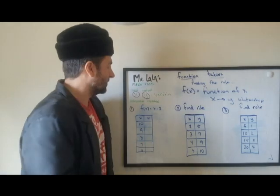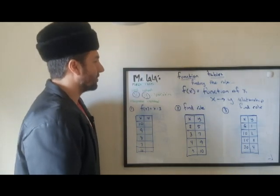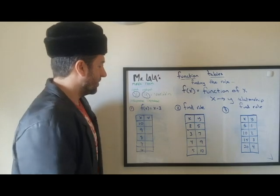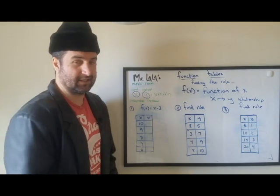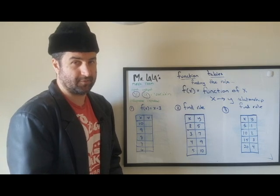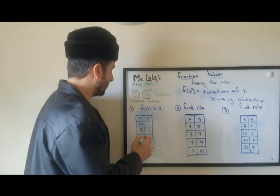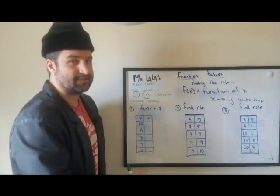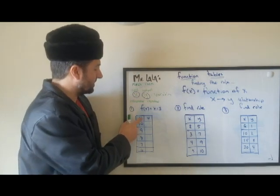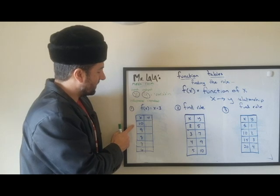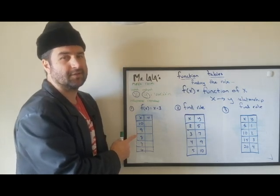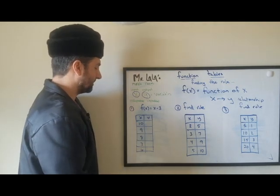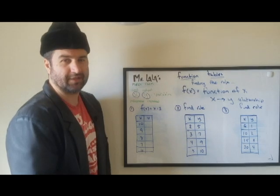Here are examples to discover what happens in a function table. Whenever we have a relationship XY, we practice. There is no smiling, no laughing — I'm kidding, please don't report me, I have to do community service! Okay, so function of X equals X minus 3. That means the relationship of X to Y is X minus 3. Whenever I have X, I subtract 3. So if X is 10, what will Y be?